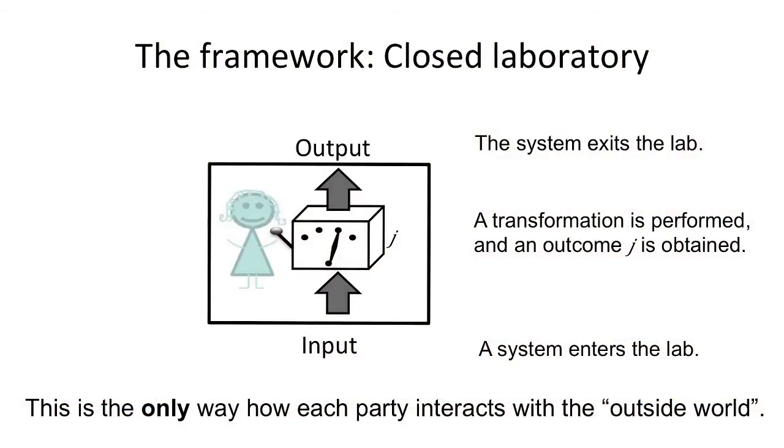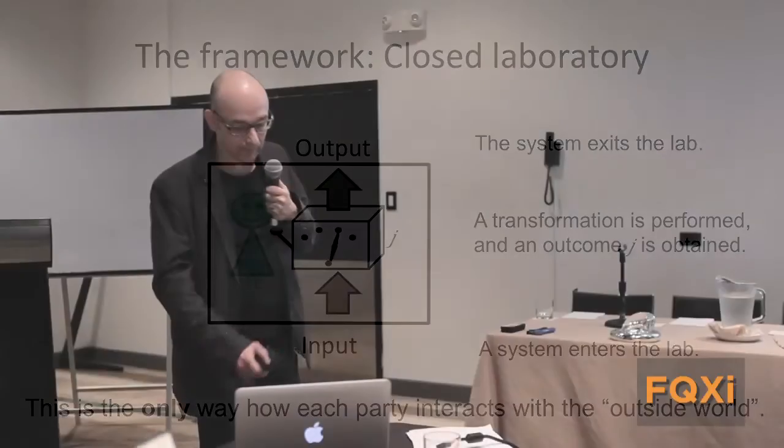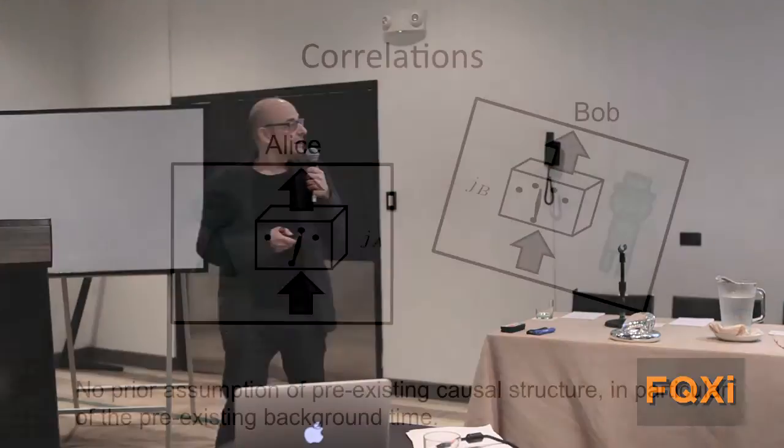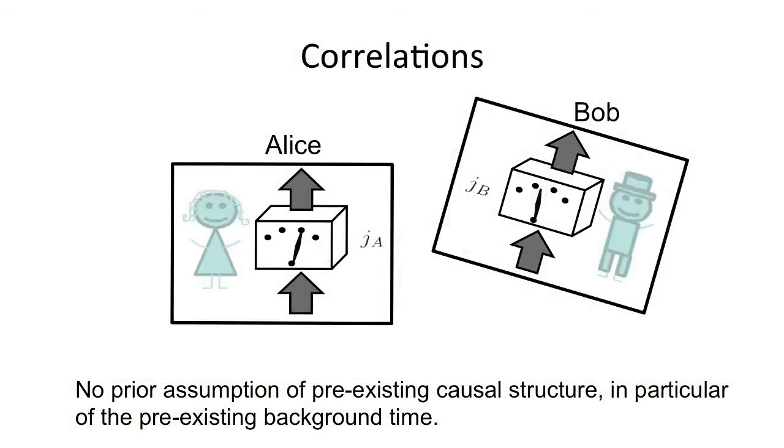What I think about here is having Alice in a closed laboratory. There are two instances of time when this lab opens: when the system enters the lab, then certain transformation is performed on the system, and the system exits the lab. That's the only way how each part of the system inside interacts with the outside world. Now I will be interested in correlations. All what I said for Alice applies for Bob as well. But I will not make any assumptions of pre-existing causal structure. I will not know whether Alice's operations are before Bob or Bob's before Alice or anything like that.